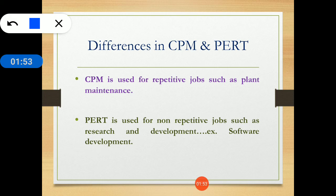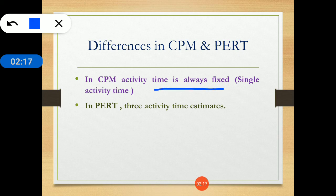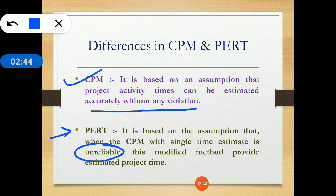CPM is used for repetitive jobs while PERT is used for non-repetitive jobs such as research and development, for example software development. In CPM the activity time is always fixed — a single activity time — while in PERT three activity time estimates are used. CPM assumes activity times can be estimated accurately, while PERT provides an estimated project time when a single time estimate would be unreliable.